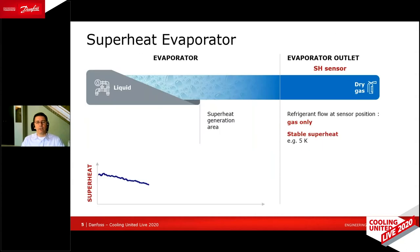Here's an explanation why that is. Looking at an evaporator, it is filled with a mixture of gas and liquid that evaporates inside. At the end of the evaporator, we have an area where we generate the superheat — gas leaves the evaporator as dry gas, with a stable superheat of, let's say, 5 Kelvin. The blue curve shown is the superheat measurement.